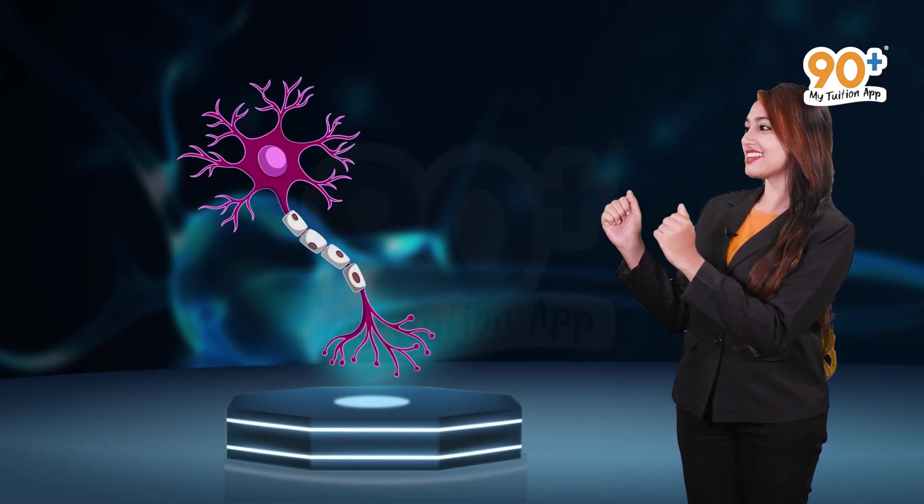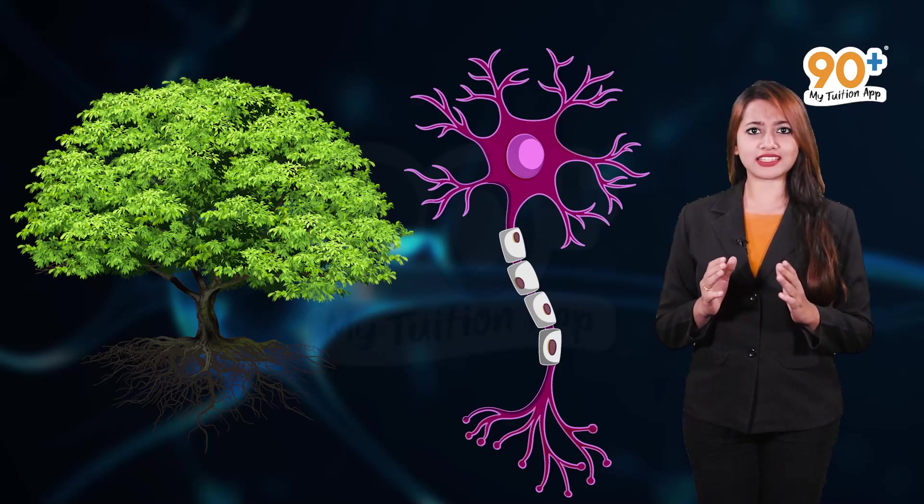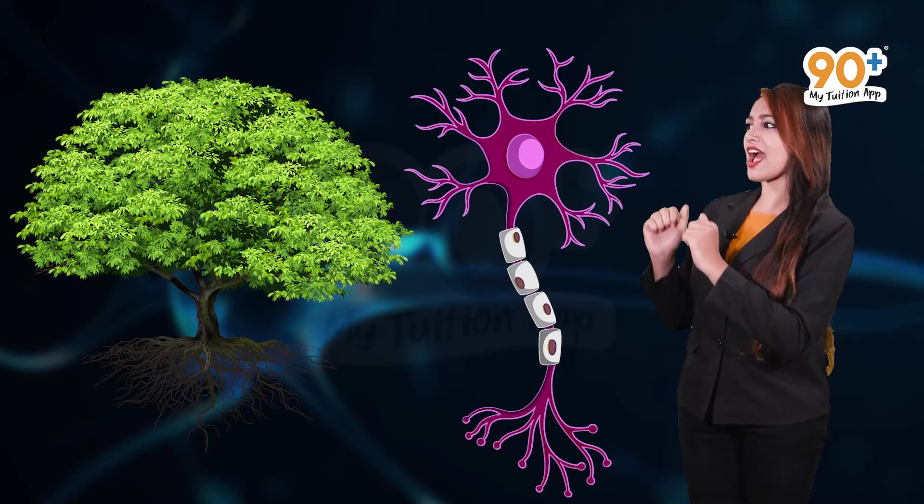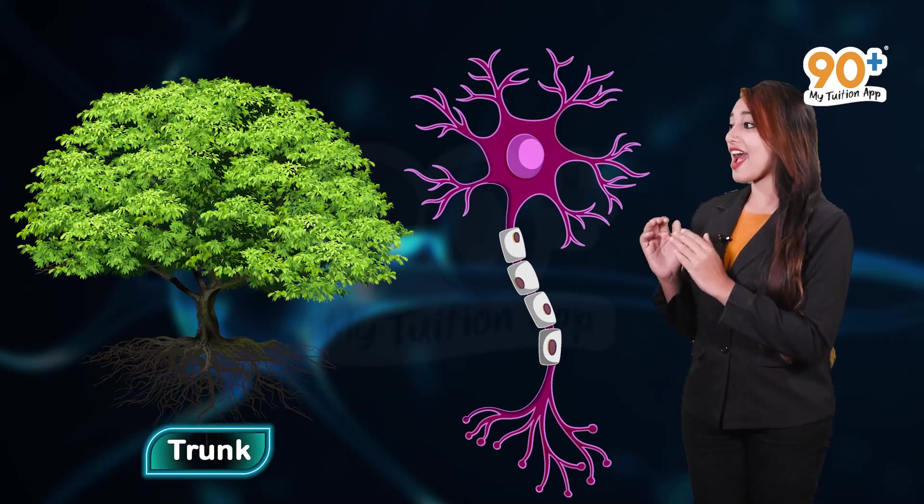After all these talks, I know you guys are excited to learn about our hero, the neuron. But wait, is it a cell or a tree? They both look similar, isn't it? As you can see, a tree have three parts like the crown, the trunk and the root.